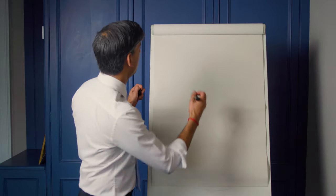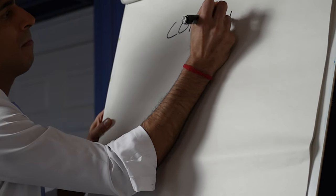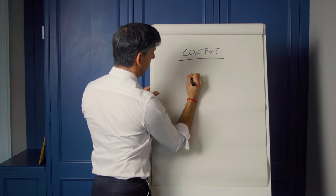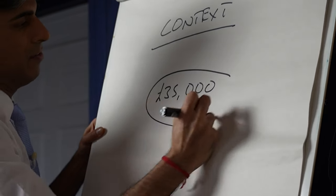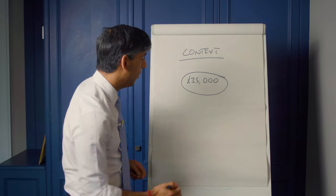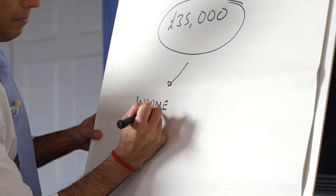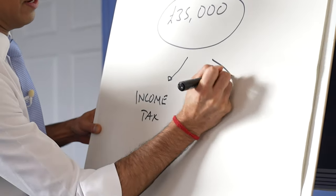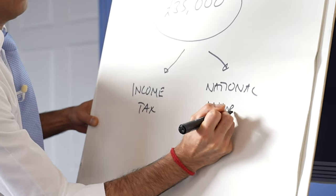But I wanted to start with a little bit of context. Now the average person in work earns around £35,000, but you'll know that you pay tax on that money twice: first in income tax and then again in national insurance.